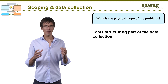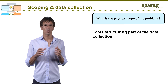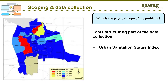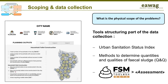Let's now move to the scoping and data collection itself. Different tools exist to understand from different angles what is the physical scope of the problems. The Urban Sanitation Status Index tool helps to map out information, and an example will be shown in the next module. The Q&Q method seeks to collect data relevant to determine the quantities and qualities of fecal sludge, which is the basis for the design of fecal sludge treatment plants, and will be explained in detail in a dedicated module. We also encourage you to try out the assessment tools provided in the FSM toolbox, especially FSM Pro assessment, which allows you to make geo-referenced surveys and helps you analyze and visualize your data.